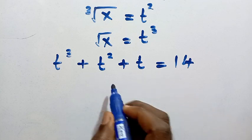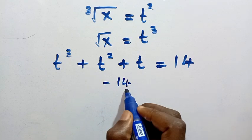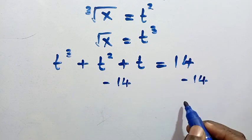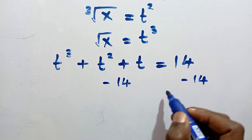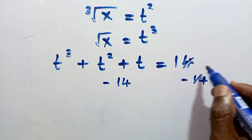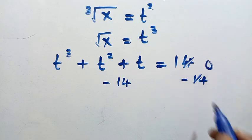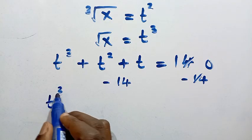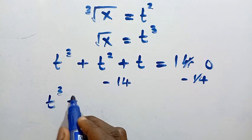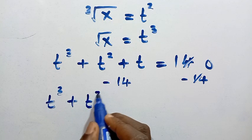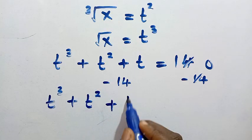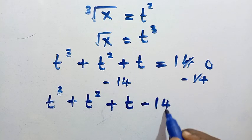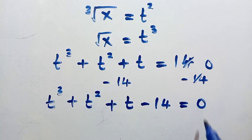By subtracting 14 from both sides, we make everything equal to zero. So we have t cubed plus t squared plus t minus 14 equals 0.